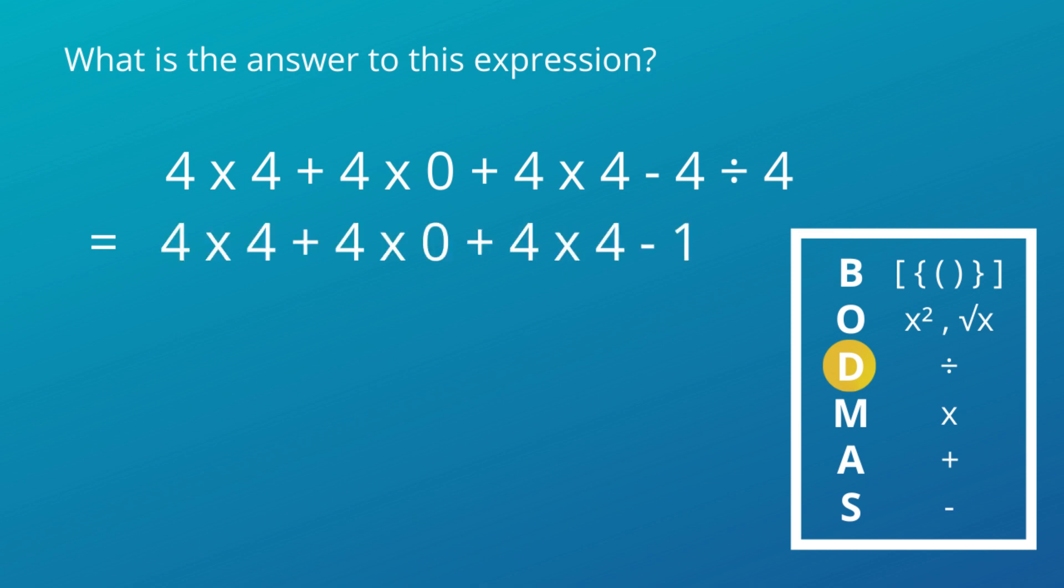Next, priority goes for the multiplication. 4 times 4 equals 16. 4 times 0 is 0. Again, 4 times 4 equals 16.